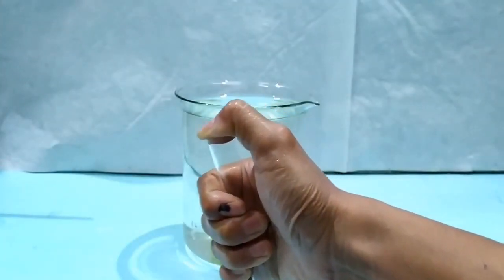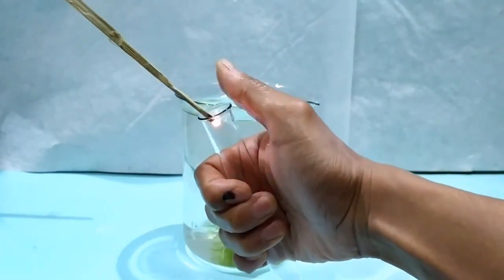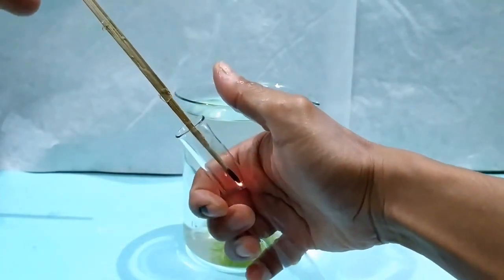Remove the thumb and immediately introduce a glowing splinter into the test tube. You'll notice that the glowing splinter reignites with a pop sound.